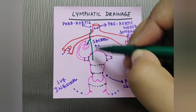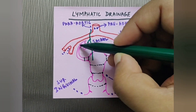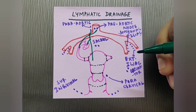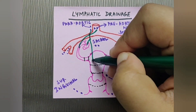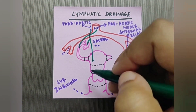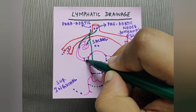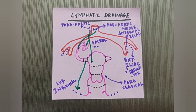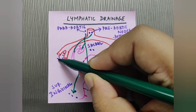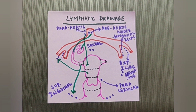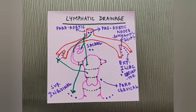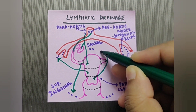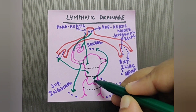The lymph from the fundus, the upper part of the body, the fallopian tube, and the ovaries drains to the para-aortic and pre-aortic lymph nodes. Lymph from the isthmus part of the fallopian tube goes to the superficial inguinal lymph nodes, and lymph from the lower part of the body goes to the external iliac lymph nodes. Lymph from the cervix goes to the sacral lymph nodes.